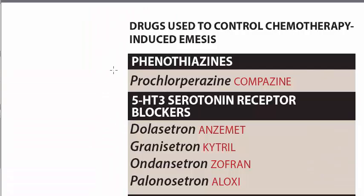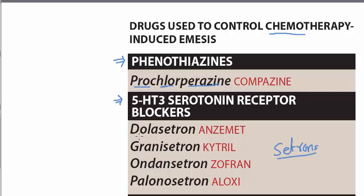Then we come to the antiemetics. In the antiemetics, most importantly for nausea related to chemotherapy, we have phenothiazines — in which we have prochlorperazine. Then we have 5-HT3 serotonin receptor blockers, and in those we have the '-setrons': dolasetron, granisetron, ondansetron, and palonosetron.